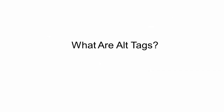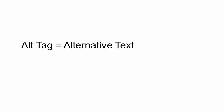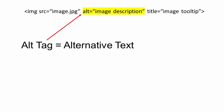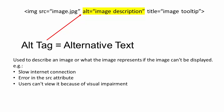So, what are alt tags and what do alt tags do? An alt tag or alt attribute is an alternative text used to describe an image or what the image represents if the image can't be displayed — for example, due to a slow internet connection, an error in the source attribute, or if users can't view the image because of visual impairment, or they choose to surf the web with images turned off.